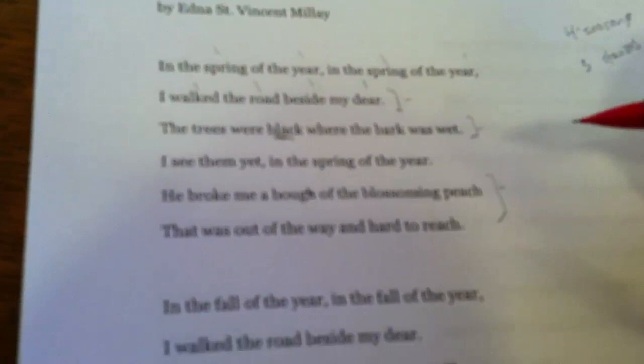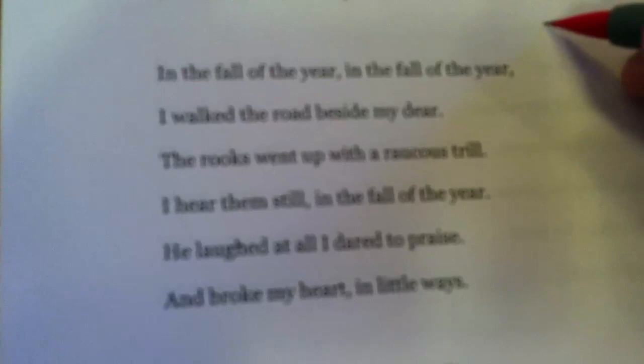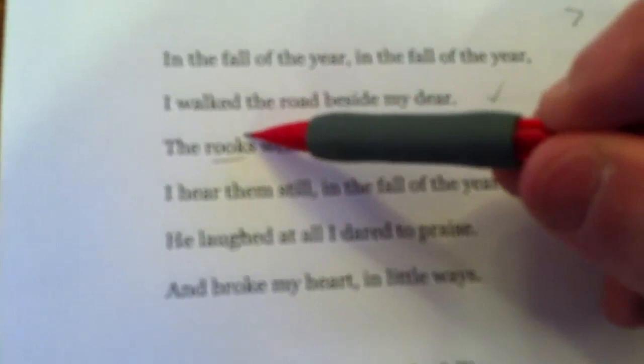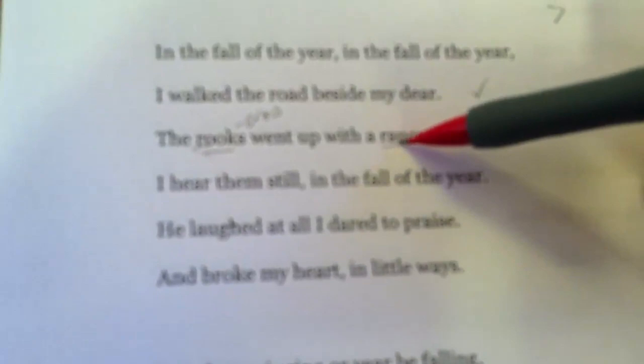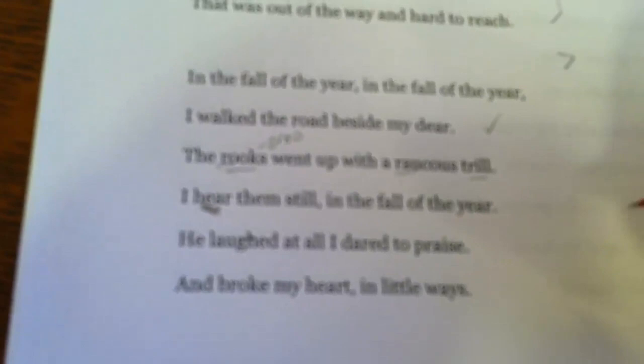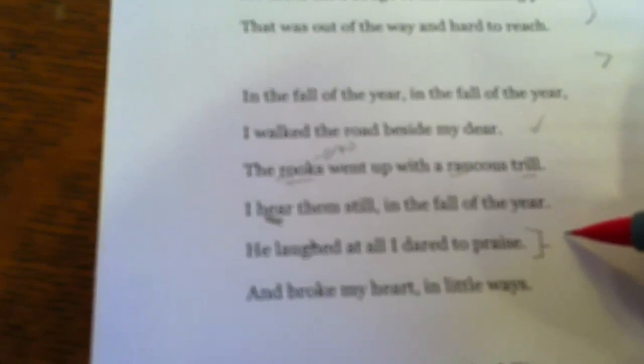Then we have 'in the fall of the year.' Seasons have changed; we're missing the summer — that's our missing stanza. 'I walked the road beside my dear' — same action. 'The rooks went up with a raucous trill.' What's a rook? A rook is a crow. Why call it a rook and not a crow? We have rooks, raucous, trill — sounds the writer is emphasizing. 'I hear them still' — there's her acknowledgement of sensory perception. 'He laughed at all I dared to praise' — now we see the lover's shortcomings. What she loved, he laughed at. 'And broke my heart in little ways' — not all at once, in little ways, more like the changing of the seasons.